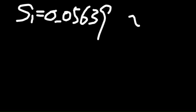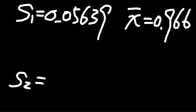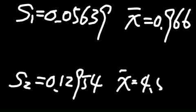And then you get the standard deviation for the first data set is 0.05639, and the mean is 0.966. And for the second data set, the standard deviation is 0.12954, and the mean is 4.534.